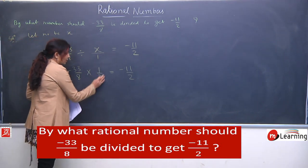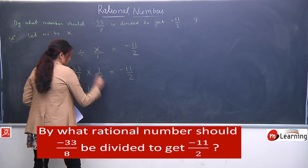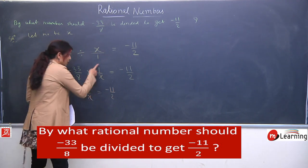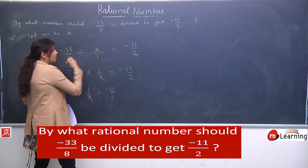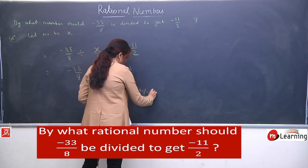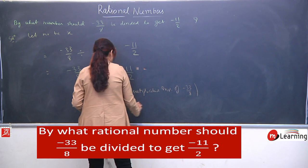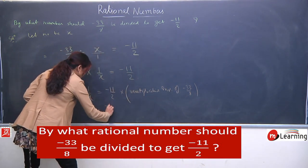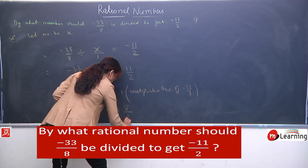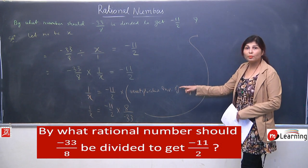Let the number be x. Jo bhi aapko divide dena hai, woh aap likhenge x. Now yahan par aapka variable jo hai, woh denominator mein hai — 1 by x. Aap use as it is copy karenge to the left side. Jo procedure hai left side mein rakhne ka — woh hum ne nahi kiya, but yahan par it is in division — 1 by x. So as it is, will shift this to right hand side. Same procedure: multiplicative inverse of minus 33 by 8. Multiplicative inverse of this is 8 by minus 33 — denominator shifts to numerator and numerator shifts to denominator, because we are finding multiplicative inverse.